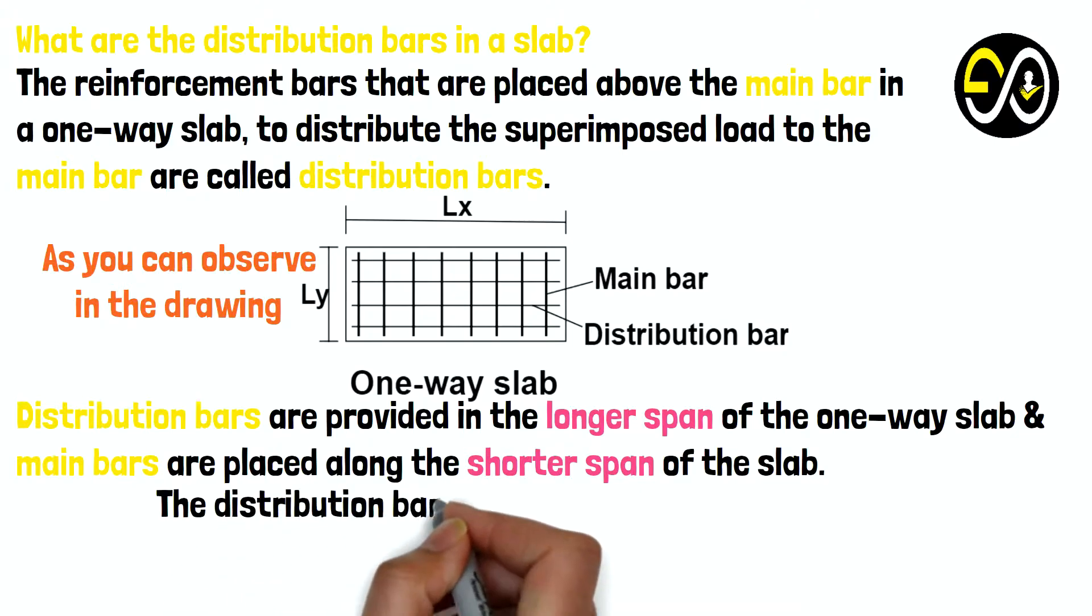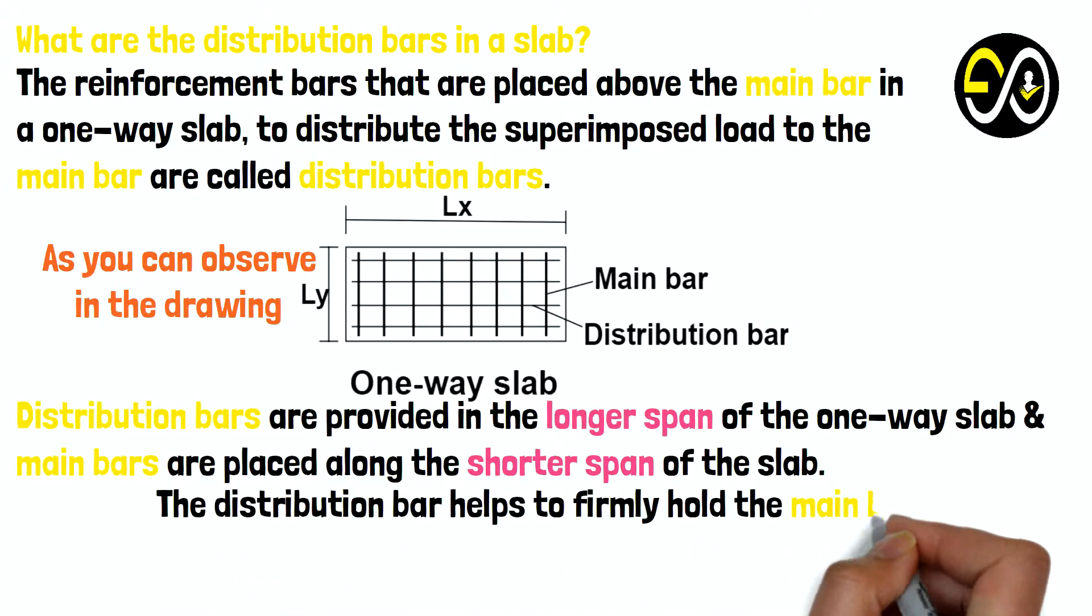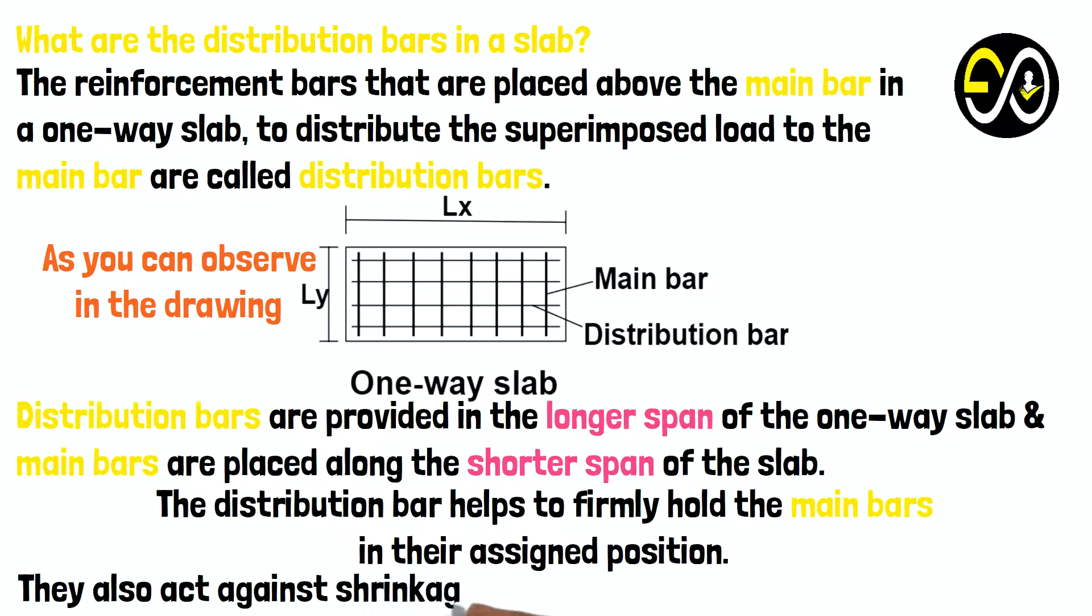The distribution bar helps to firmly hold the main bars in their assigned position. They also act against shrinkage stresses due to temperature variations.